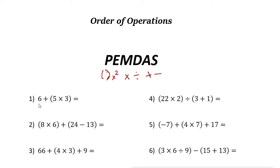Let's take a look at the first example: six plus parentheses five times three. If you don't follow the rules for order of operations and just go left to right, you get six plus five equals eleven, then times three equals thirty-three — which is wrong. To solve correctly, you first solve the parentheses: five times three is fifteen. Then six plus fifteen is twenty-one. The answer is twenty-one.